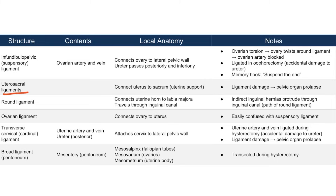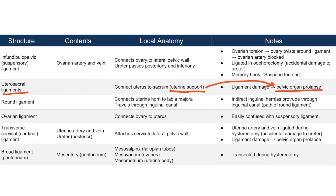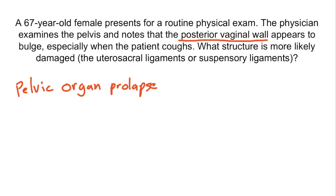Let's do a question to apply what you've learned. A 67-year-old female presents for a routine physical exam. The physician notes the posterior vaginal wall appears to bulge, especially when the patient coughs. What structure is more likely damaged — the utero-sacral ligaments or the suspensory ligaments? This patient has pelvic organ prolapse. Of the two ligaments listed, the utero-sacral ligaments are responsible for supporting the uterus.